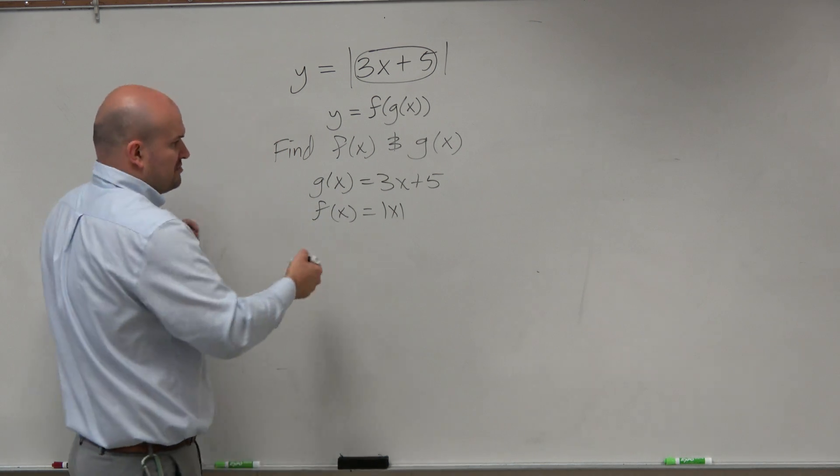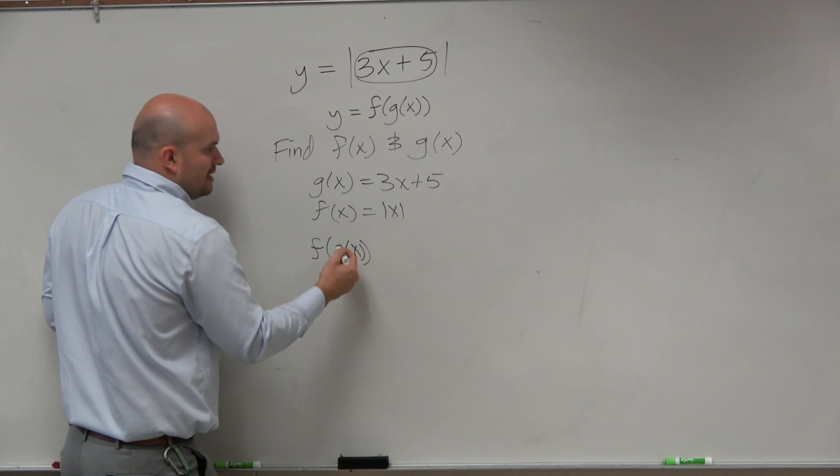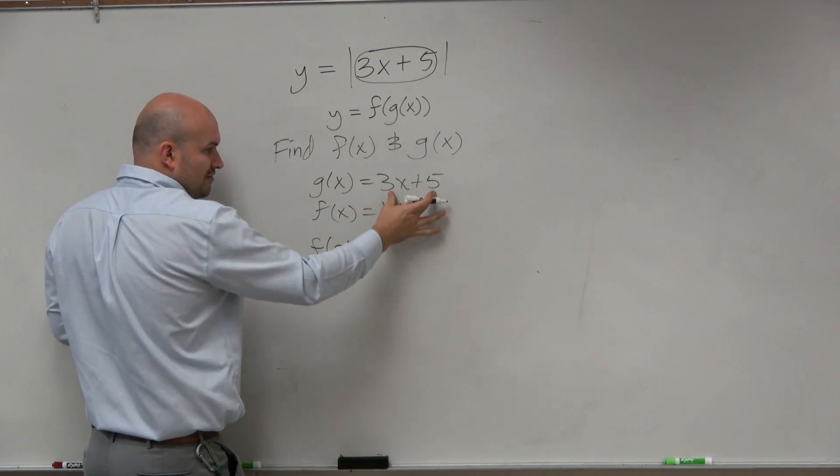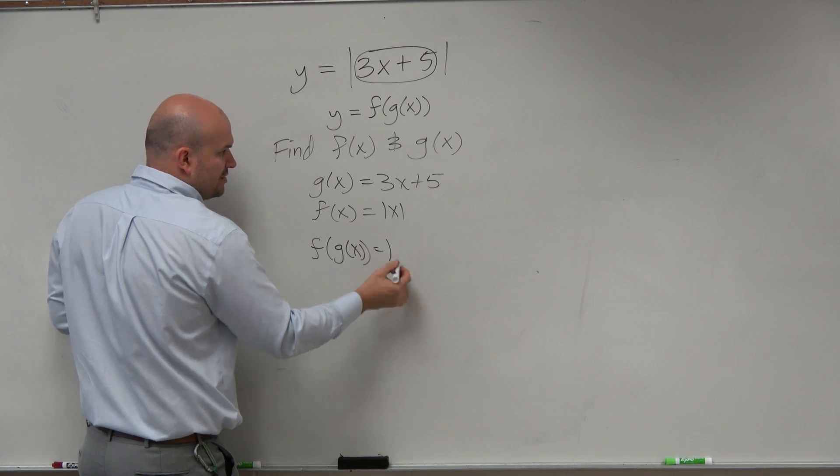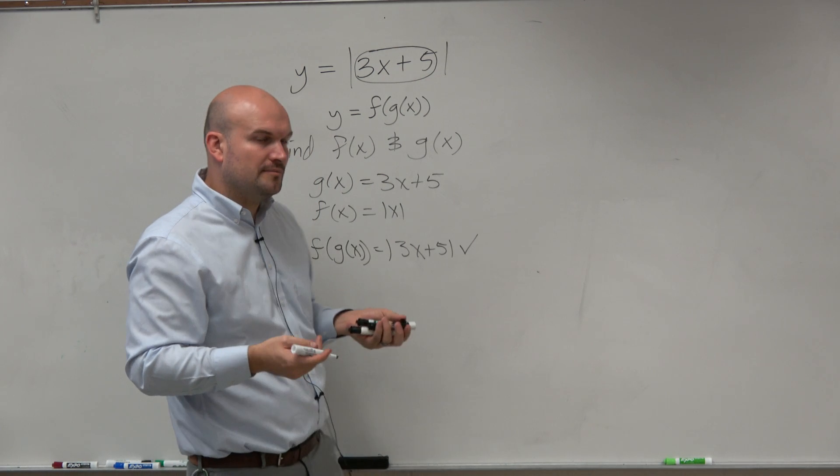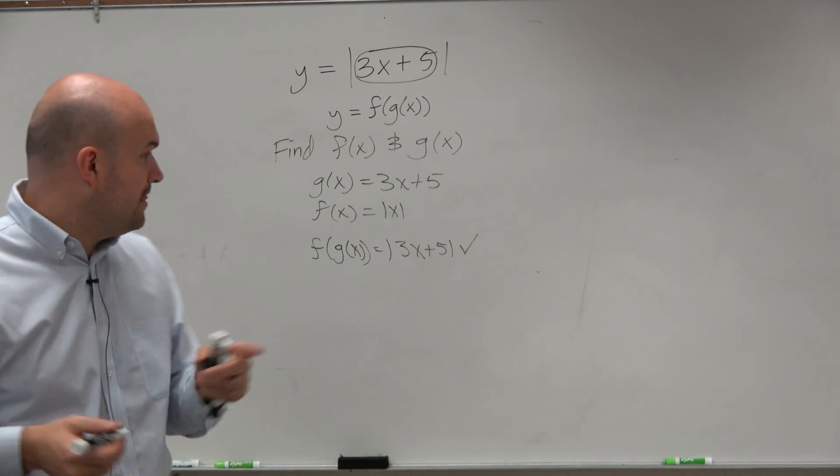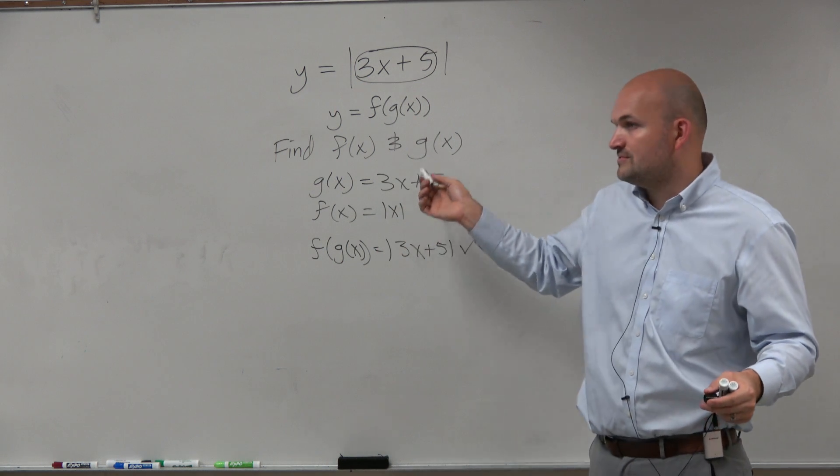So now let's think about this. Let's just practice going through this. If I was going to find f of g of x, I would plug 3x plus 5 in replacement of my variable. So it would be 3x plus 5, which works, right? So therefore we can say yes, that is correct. f of x is absolute value of x, g of x is 3x plus 5. Do you have a question?